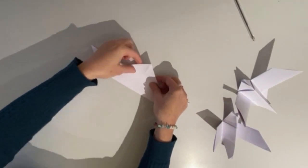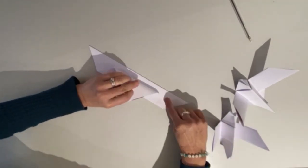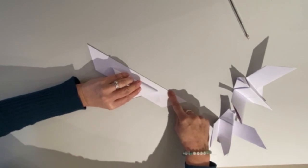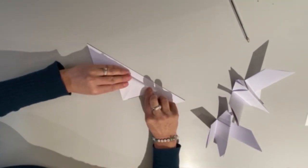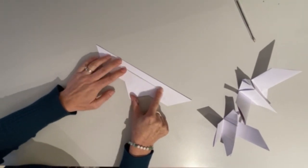I'm then going to fold the tip of this triangle back towards myself with the fold about halfway across this piece. So it looks like that.